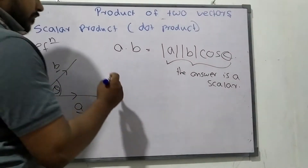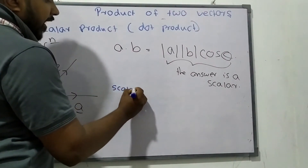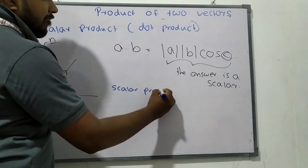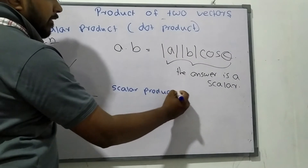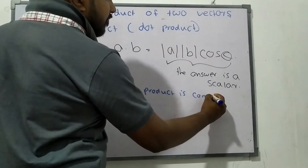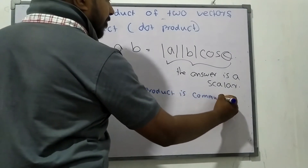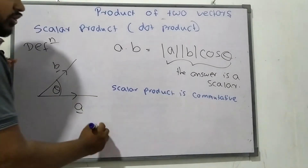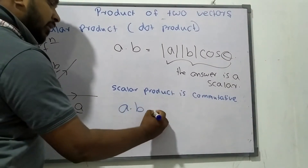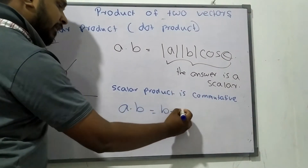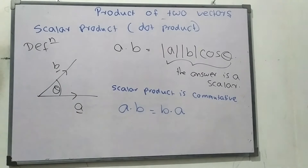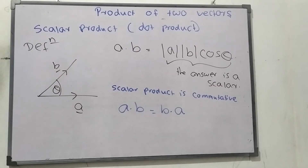The scalar product is commutative. Commutative means A dot B equals B dot A. The definition is the same in both cases, so A dot B equals B dot A, and therefore the scalar product is commutative.